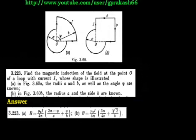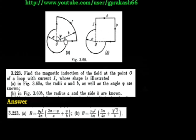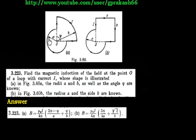This is a quite easy problem — we have to find the magnetic field. We have two diagrams: figure A and figure B. We need to find the magnetic field at point O in each figure due to this arrangement. There is a current in a loop, the angle is phi (φ), the inner radius is a, and the outer radius is b.